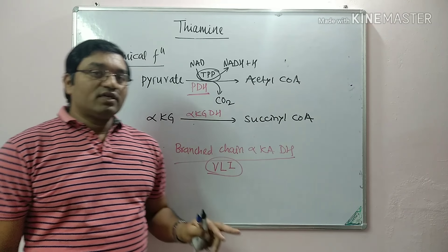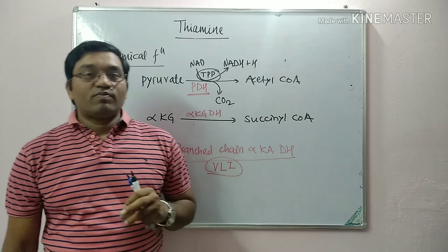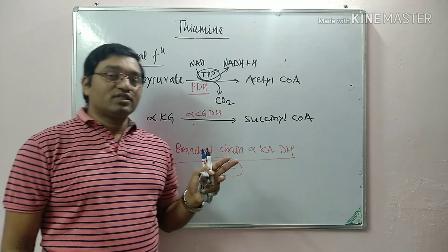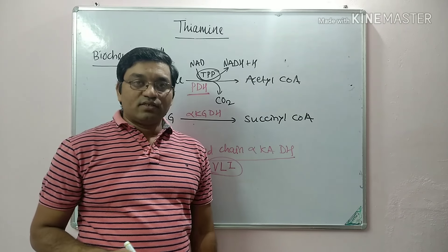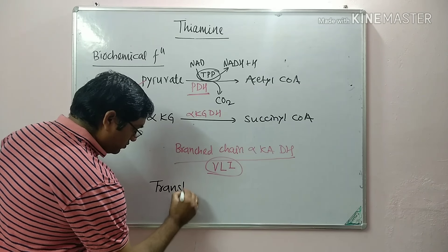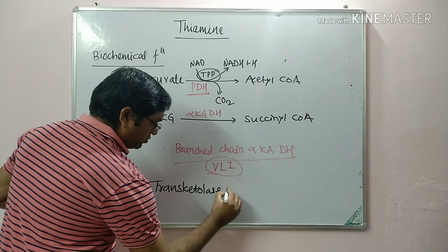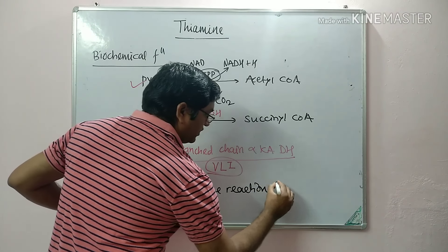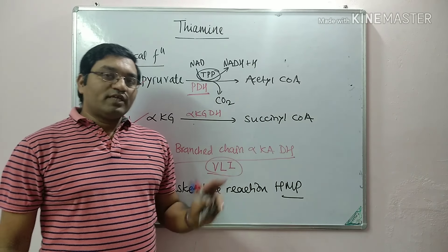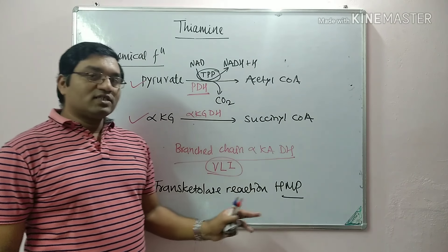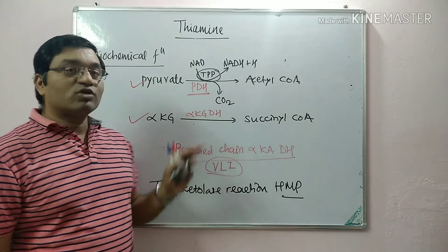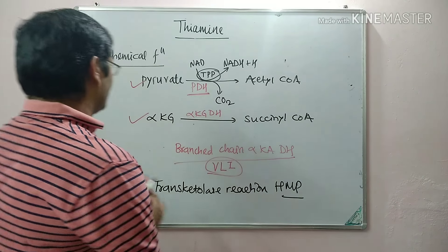The second important function of thiamine is transmission of nerve impulses. The exact mechanism behind this is not fully known. Another important reaction catalyzed by thiamine is the transketolase reaction: in the HMP shunt there are two transketolase reactions, both catalyzed by transketolase using Thiamine Pyrophosphate as the coenzyme.